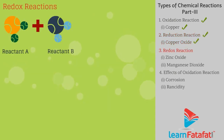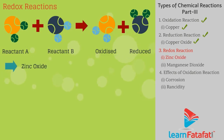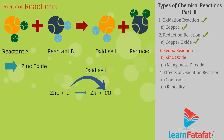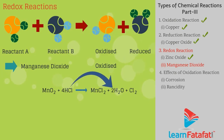Redox reaction: A reaction in which one reactant gets oxidized while another gets reduced is called an oxidation-reduction or redox reaction. Example one: ZnO + C → Zn + CO — here carbon is oxidized to CO and ZnO is reduced to Zn. Example two: MnO2 + 4HCl → MnCl2 + 2H2O + Cl2 — here HCl is oxidized to Cl2 and MnO2 is reduced to MnCl2.